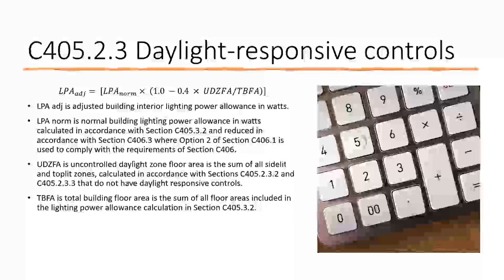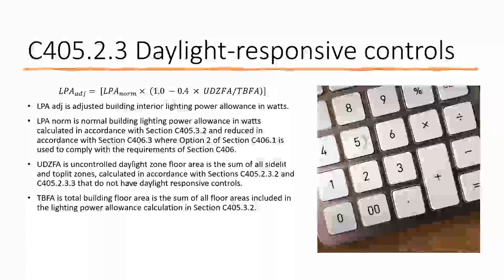The UDZFA is the uncontrolled daylight zone floor area — there could be some areas where you have daylight zones that are required to be controlled, and those are not included in this calculation. The TBFA is the total building floor area — the sum of all floor areas included in the lighting power allowance calculation. Probably the first thing to do is calculate all your daylight zones, figure out that number, apply it in and then figure out which are absolute and which are optional. If the adjusted LPD is less than your normal lighting power value, then you don't have to have daylight responsive controls.